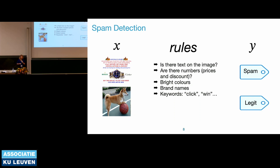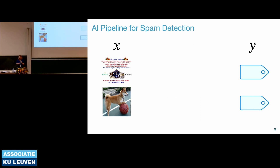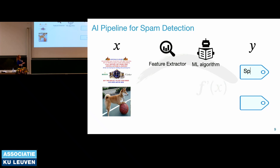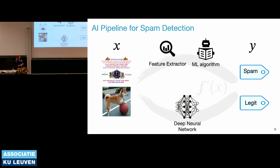The classical pipeline uses a feature extractor plus a machine learning algorithm. The feature extractor — for example, based on computer vision — would extract words, counters, and colors, then a machine learning algorithm approximates the function to predict spam versus not spam. An alternative, more end-to-end approach uses deep neural networks for deep learning-based classification, which subsumes feature extraction and machine learning and learns the right decisions directly from images.